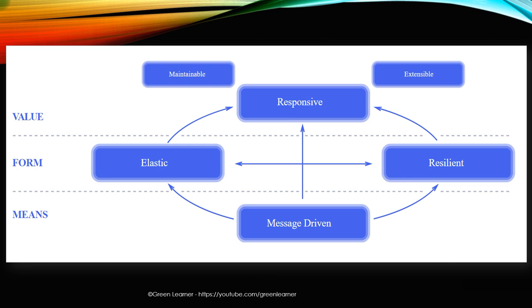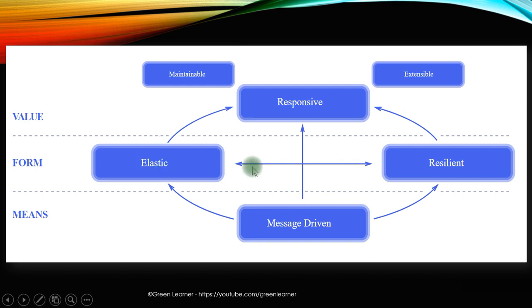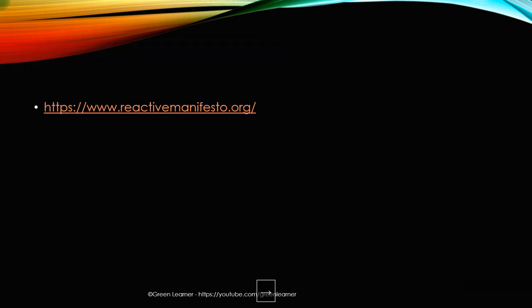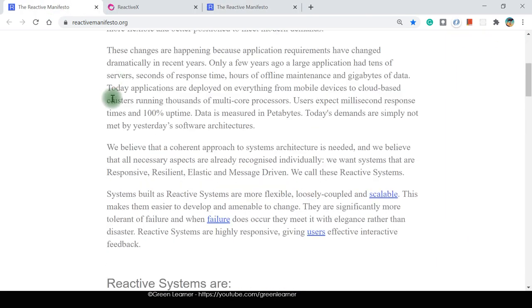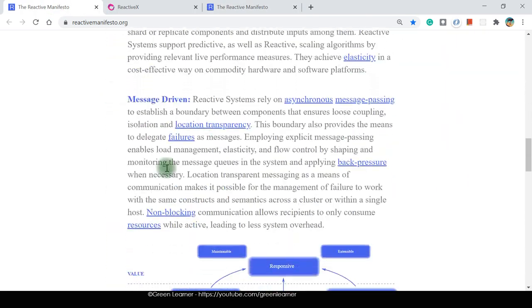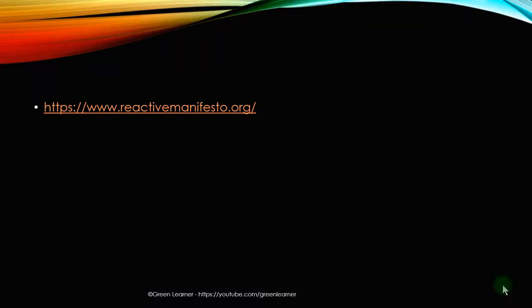Coming to the final diagram in the reactive system, you can see the value we get — responsiveness to the user — is delivered in the form of elasticity and resiliency. This happens in a message-driven format and is very much maintainable and extensible. Here is the reactive manifesto; you can go ahead and see more about this. The same things I have explained are mentioned there. That's all about reactive systems.